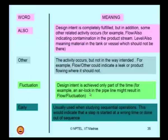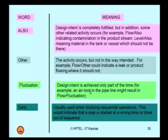An air lock can be a cause for this deviation. I think you are slowly getting the point — how to identify the secondary keyword, the primary keyword and the cause; how to identify the design intent, the deviation and the cause for the deviation.